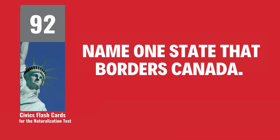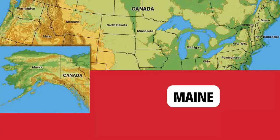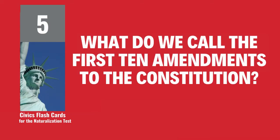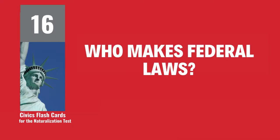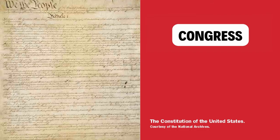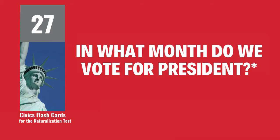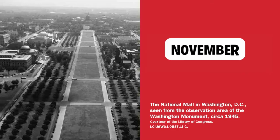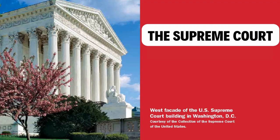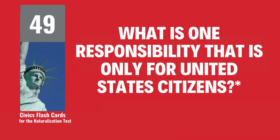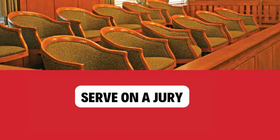Name one state that borders Canada. Maine. What do we call the first ten amendments to the Constitution? The Bill of Rights. Who makes federal laws? Congress. In what month do we vote for president? November. What is the highest court in the United States? The Supreme Court. What is one responsibility that is only for United States citizens? Serve on a jury.